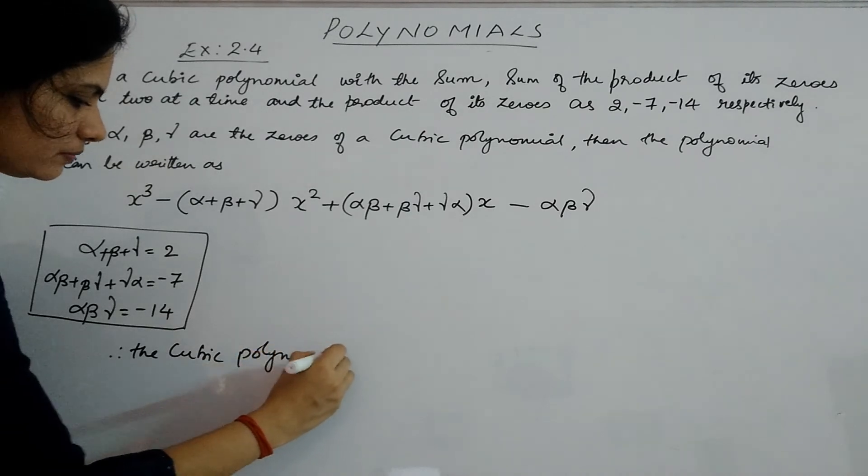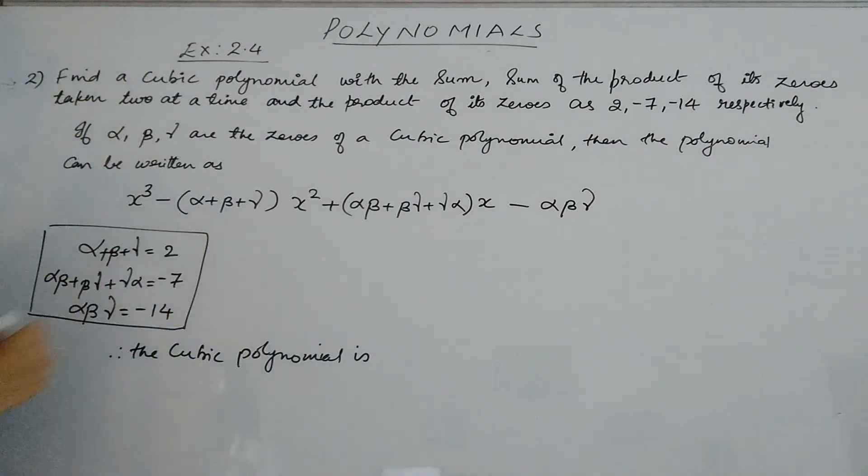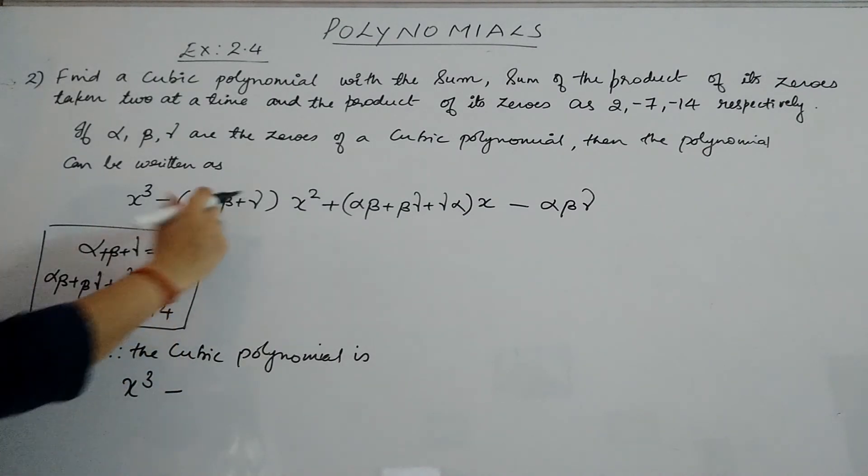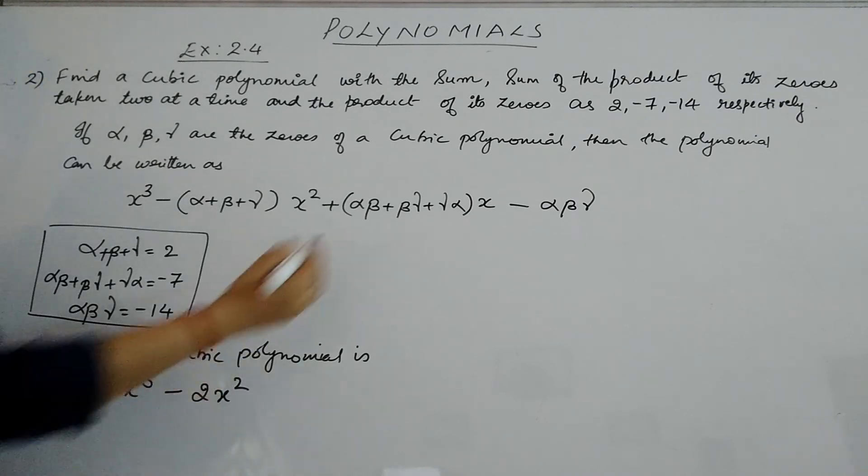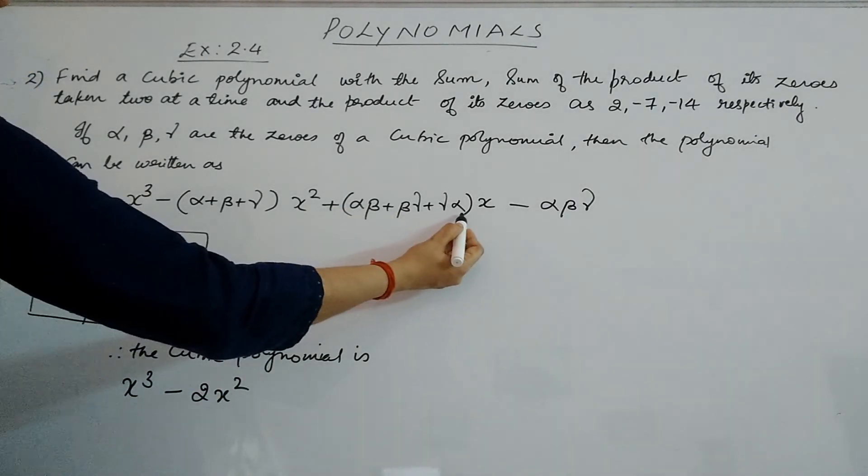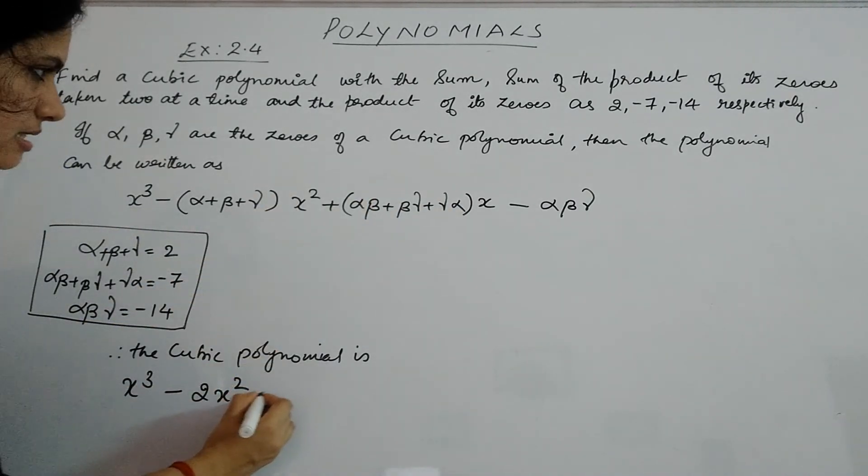x³ minus (α + β + γ)—which is given to be 2—so this becomes x³ - 2x². Then (αβ + βγ + γα) is given to be -7.